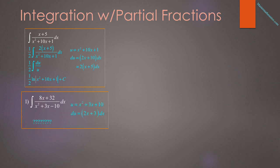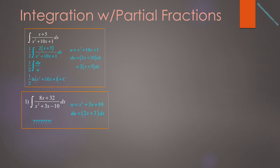We kind of got lucky in that problem. When we let u equal x² + 10x + 1, our du turned out to be 2(x + 5) dx, and we just happened to have an x + 5 in our problem. Now look at the next problem: we want the integral of (8x + 32) over (x² + 3x − 10) dx. We set the problem up the same way — u equals x² + 3x − 10, and du turns out to be (2x + 3) dx. But there is nothing we can do to 2x + 3 to get 8x + 32. Multiplying by 4 gives 8x + 12, not 8x + 32. So with our knowledge at this moment, we cannot do this integration.